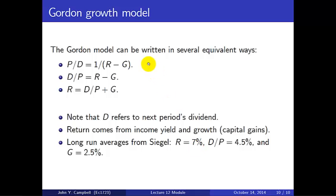In talking about this we usually drop the time subscripts — just keep in mind that the dividend is one period ahead of the price. We can write P/D = 1/(R−g), or equivalently D/P = R−g, or R = D/P + g. This last form is particularly intuitive: return comes from income plus capital gains. The income is the dividend yield, which is constant in this model, and the rate of capital gains equals the dividend growth rate g, precisely because the dividend-price ratio is constant and everything grows at a common rate.